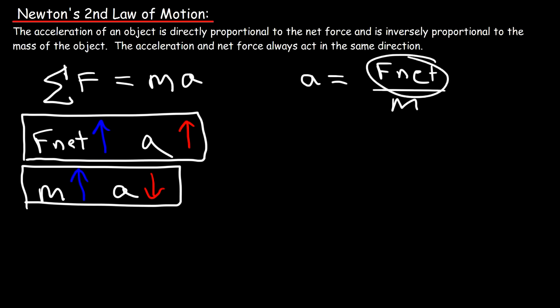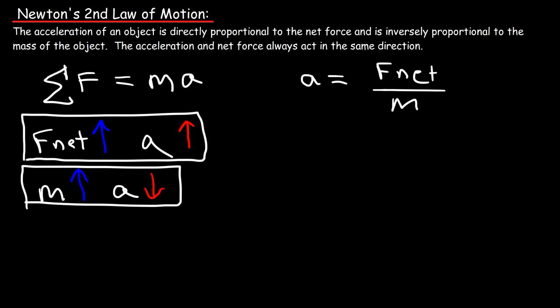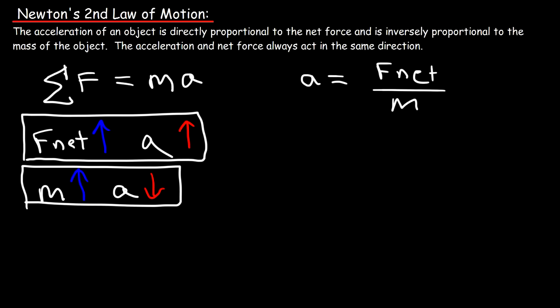If you double the force, what happens to the acceleration? If you increase the net force by a factor of 2, the acceleration will double. If you increase the net force by a factor of 3, the acceleration will triple. If you double the mass, the acceleration will be one-half of its original value — it decreases by a factor of 2. If you triple the mass, the acceleration will decrease by a factor of 3.